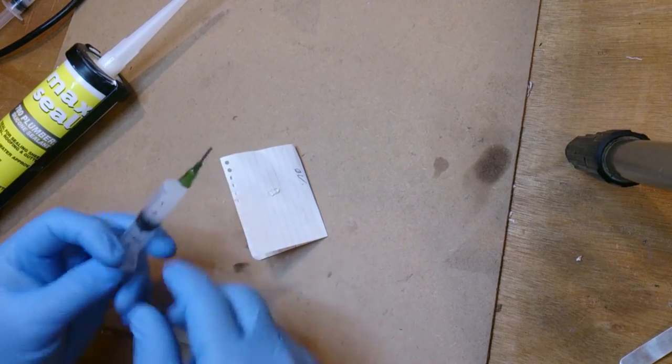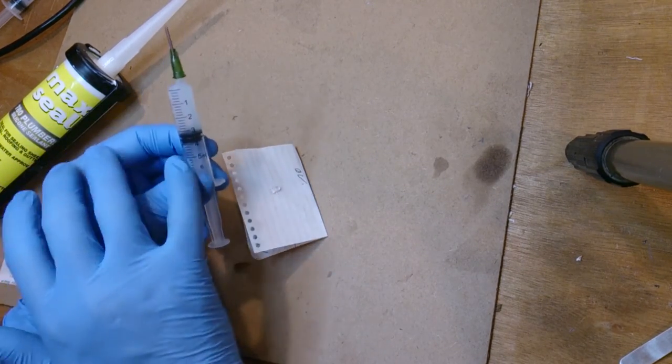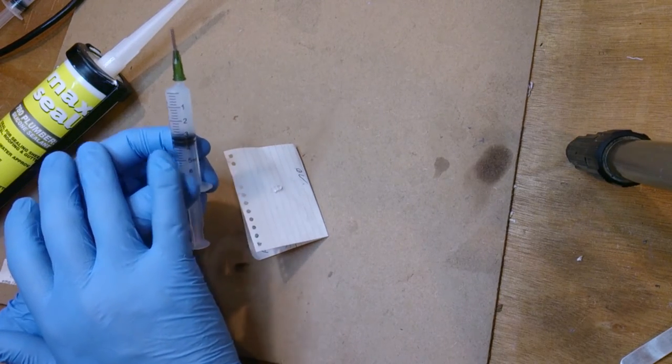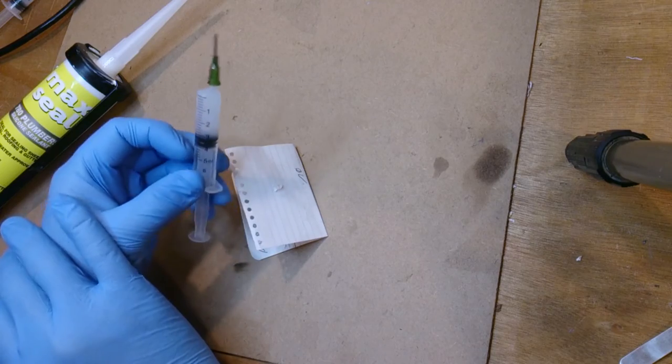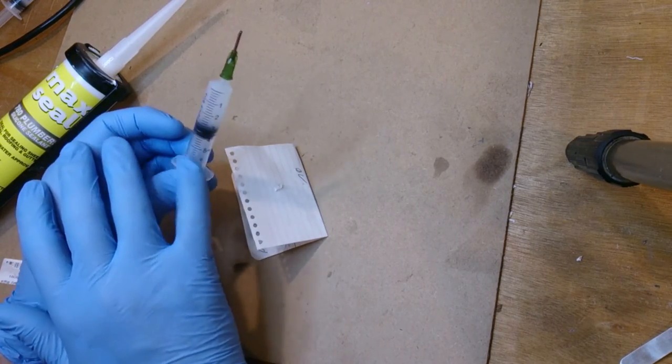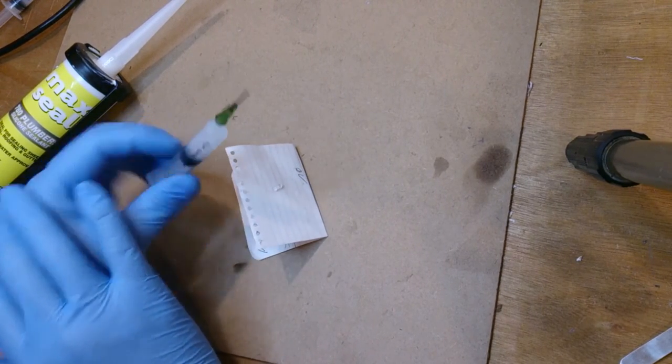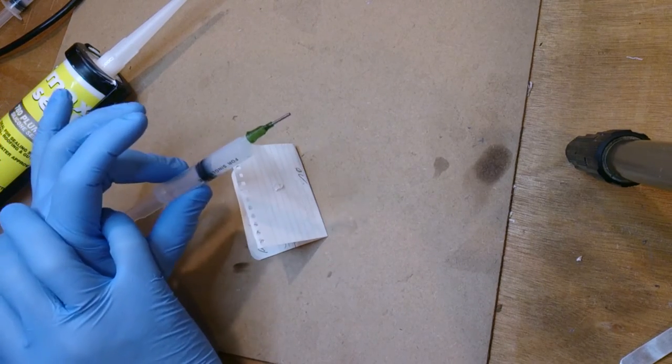There we go. Nice, easy, controlled silicon dispenser. So we've used, let's say about 3.5 milliliters of space there. So if I went for a ten milliliter syringe, that would be about probably five or six milliliters all up. Which is plenty for most projects.